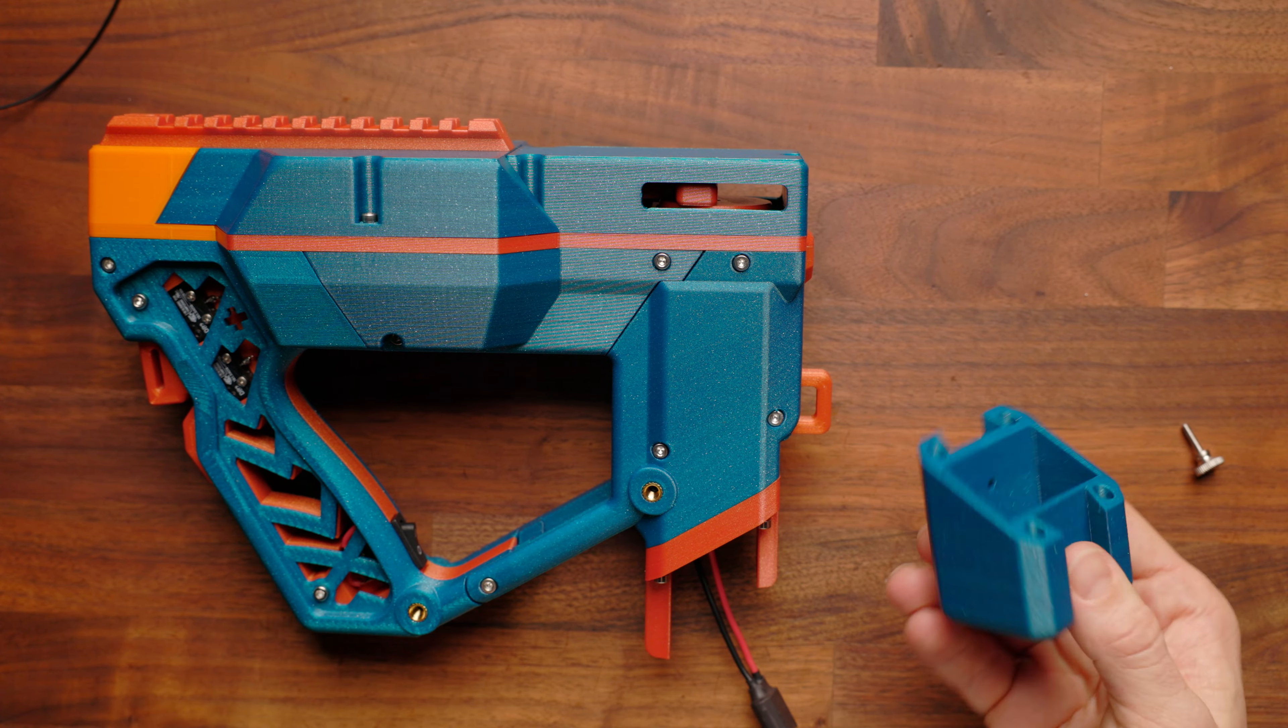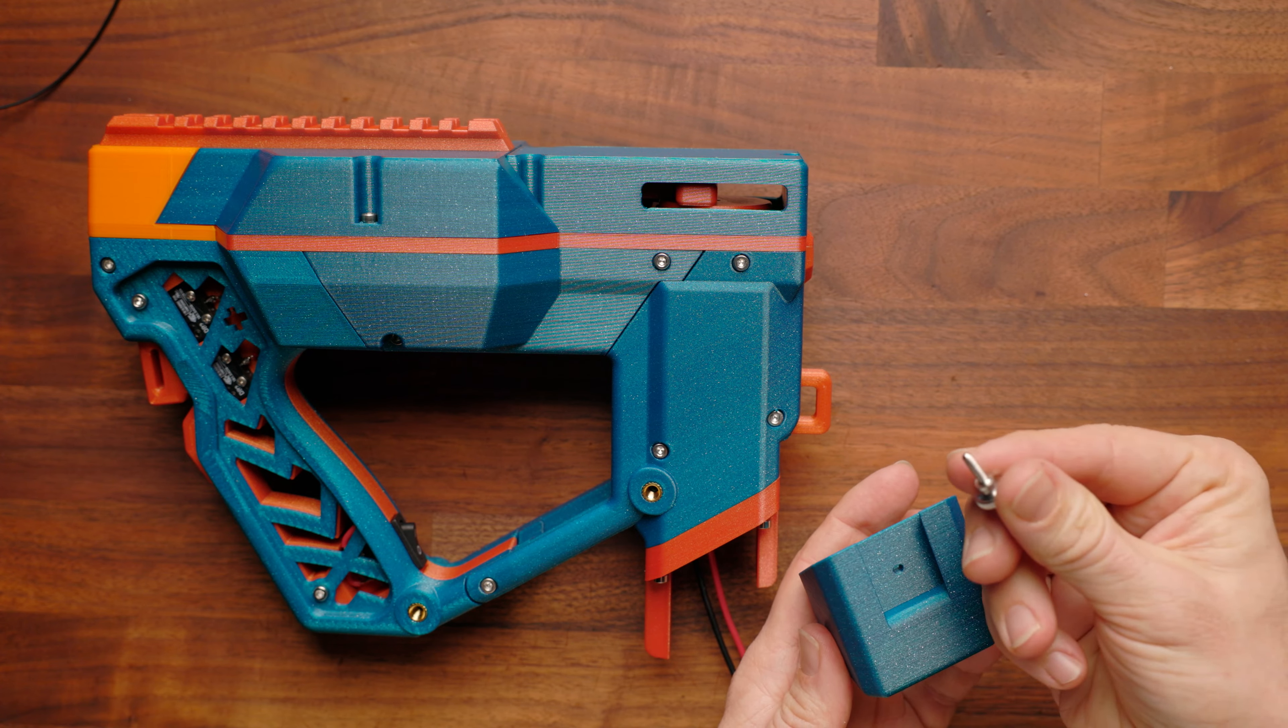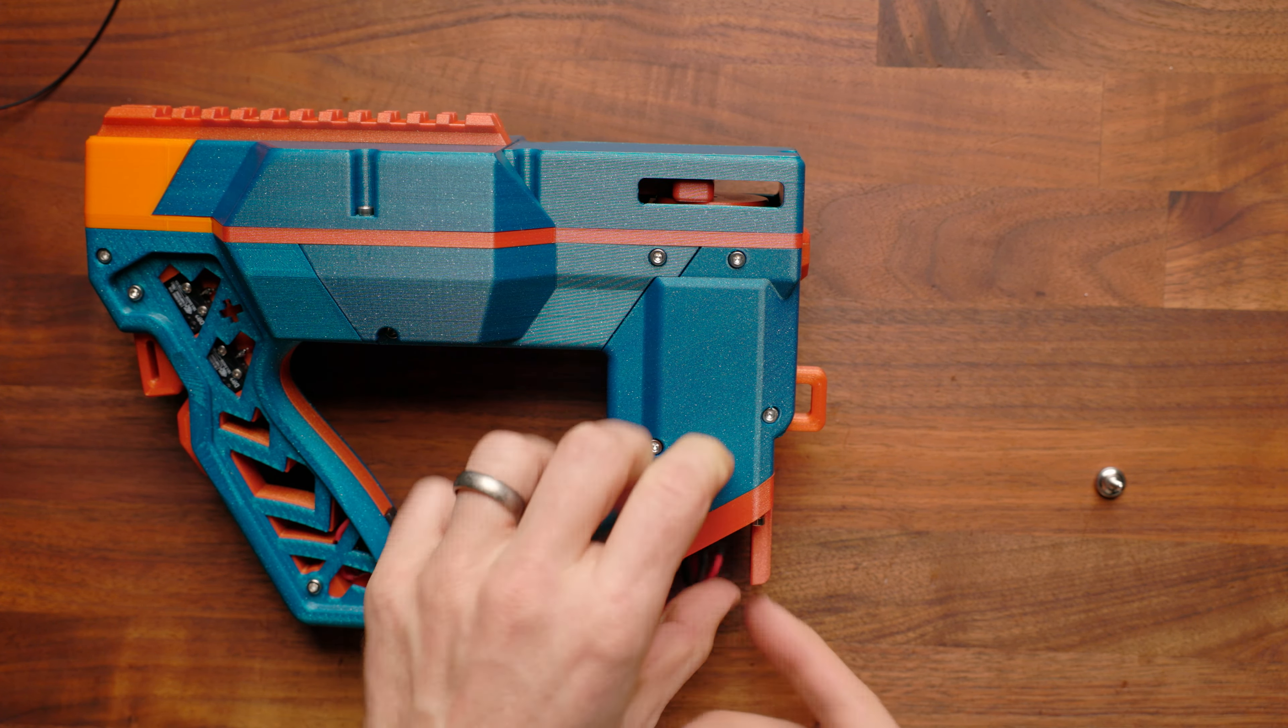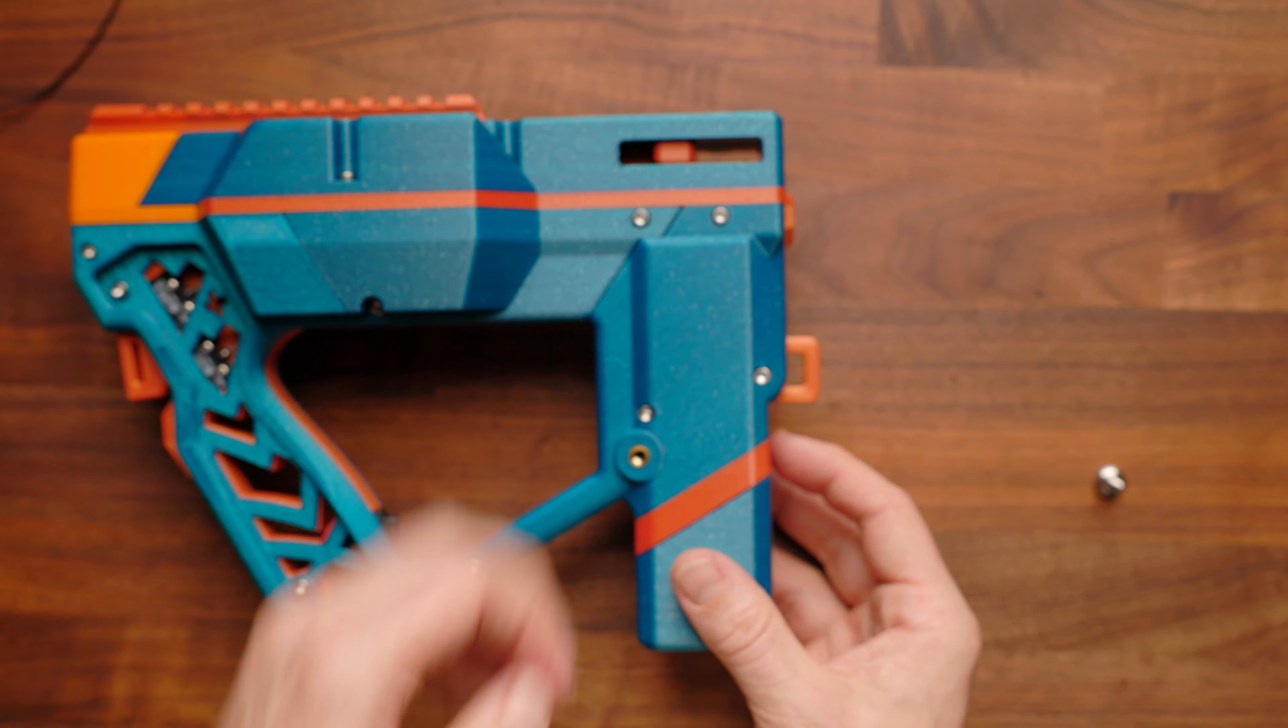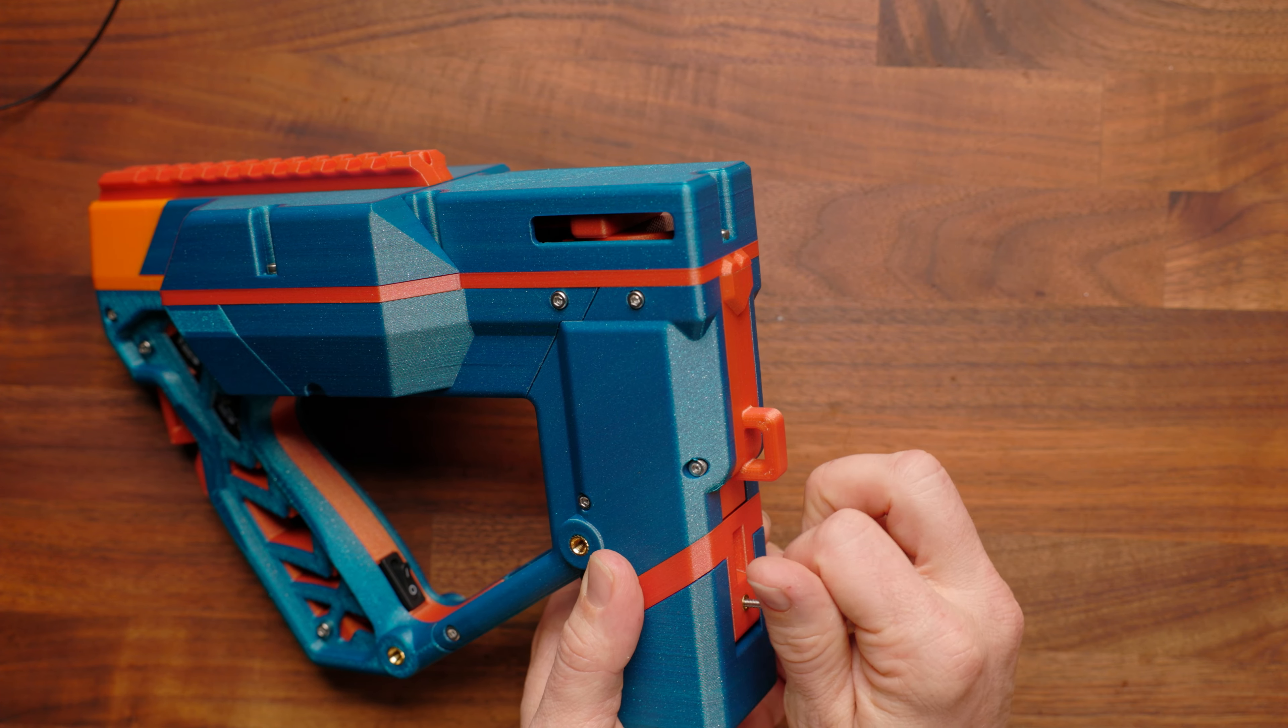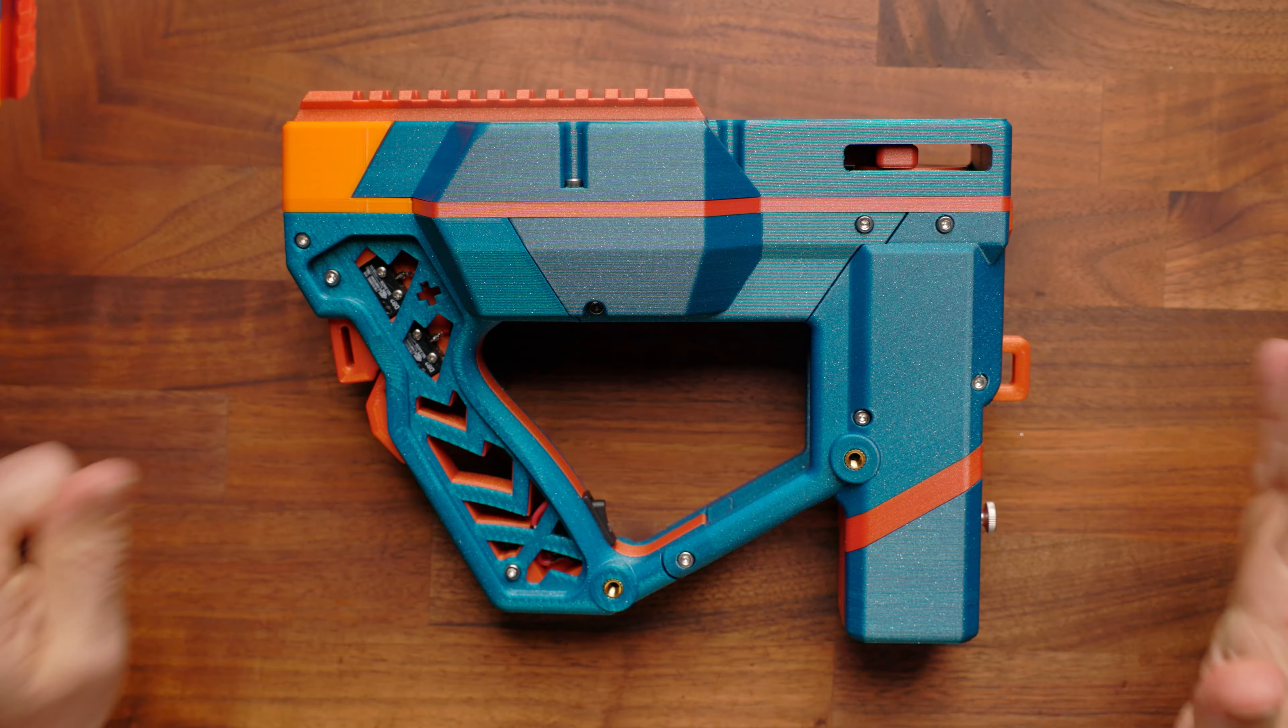Now we can put on our battery door. Battery door has one screw through the back, which is a thumb screw, and normally you would insert your battery, tuck this up inside, slide that up, and screw this thumb screw through the hole here. As far as the blaster assembly, that's actually complete, but one addition is installing the magnetic holster mounts on the side of the blaster.